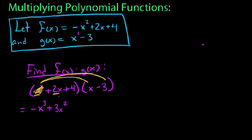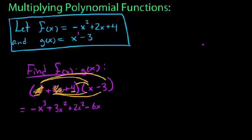Next we go to 2x and distribute it through the second set of parentheses. 2x times x is positive 2x squared. 2x times negative 3 is negative 6x. So now 2x is exhausted. We move on to the next term, which is 4. 4 distributes through the second set of parentheses: 4 times x is 4x, and 4 times negative 3 is negative 12. The method is just distributing everything on the left to everything on the right, and then we clean it up by combining like terms.